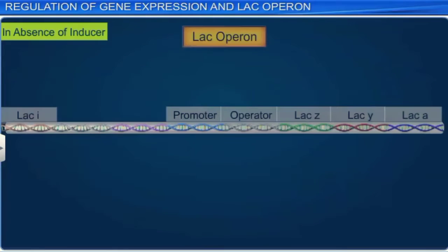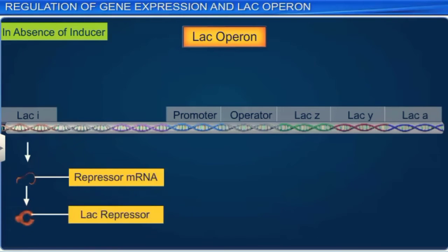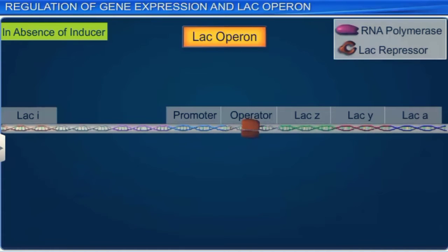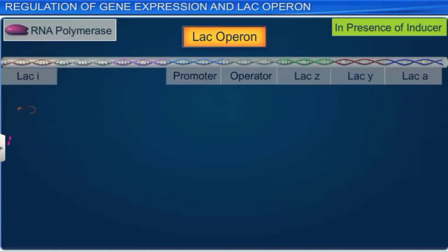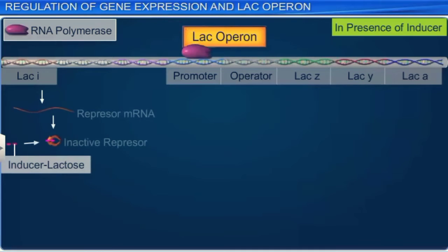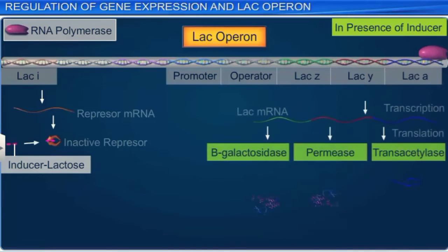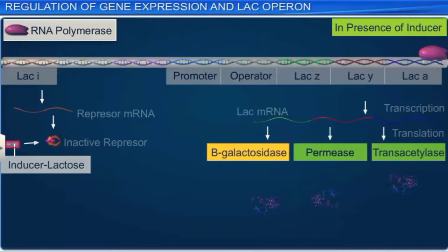The lac operon functions in the following manner. The repressor protein is continuously synthesized from the I gene. The repressor in its active state binds to the operator sequence, thus preventing RNA polymerase from binding to the promoter site and transcribing the operon. In the presence of the inducer lactose, or allolactose, the repressor is inactivated and transcription proceeds. Thus, regulation of the lac operon is an example of regulation of enzyme synthesis by its substrate, that is, synthesis of the enzyme beta-galactosidase by its substrate lactose. This regulation of the lac operon by the repressor is called negative regulation.